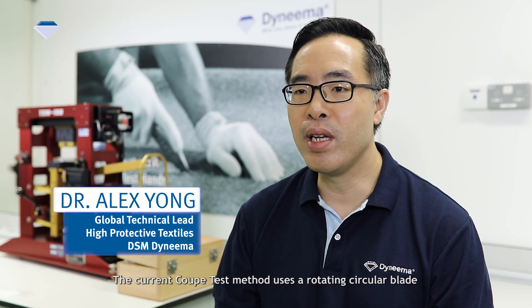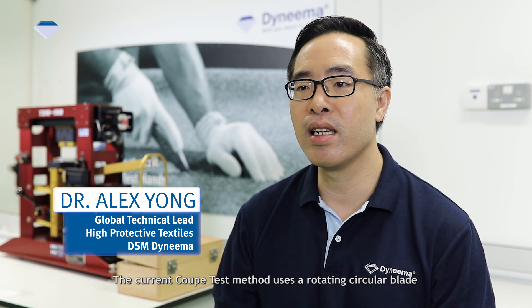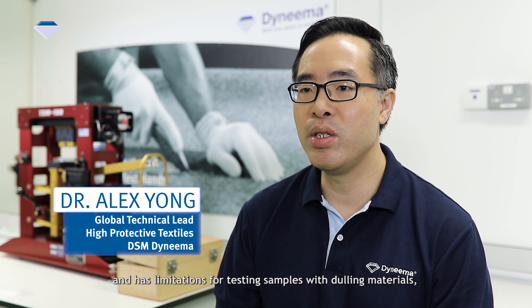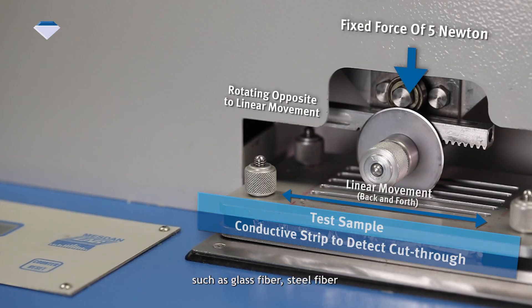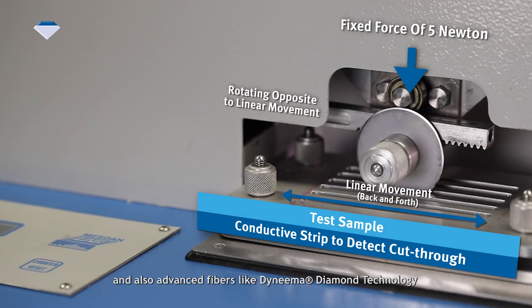The current coup test method uses a rotating circular blade and has limitations for testing samples with dulling materials such as glass fiber, steel fiber, and also advanced fibers like Dyneema Diamond technology due to the dulling of the blade.